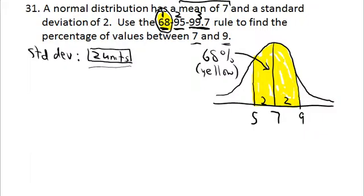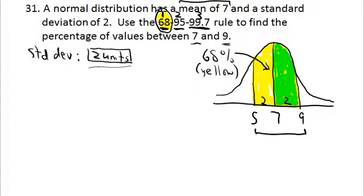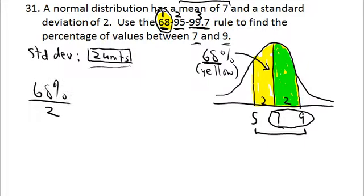But the problem said between 7 and 9, and 7 to 9 is only half of that yellow area — what I'm coloring green now. Had they asked for values between 5 and 9, the answer would be 68%. But they only asked for the area between 7 and 9, and that's only half of 68%.